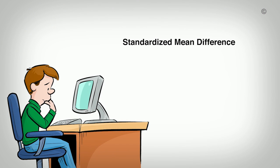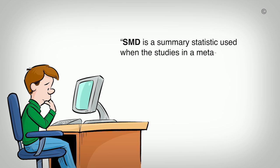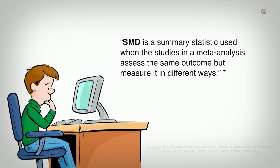In this video, we will discuss why standardized mean differences are used in meta-analyses and how to interpret them. A standardized mean difference, or SMD for short, is a summary statistic used when studies in a meta-analysis assess the same outcome but measure it in different ways. This sounds reasonable, but what does it really mean?